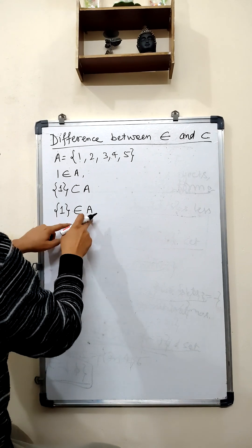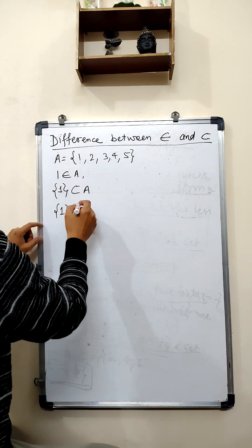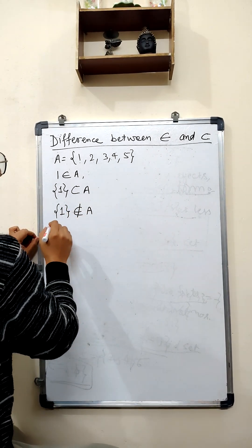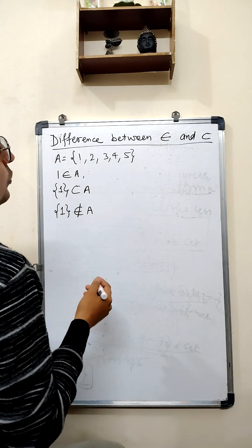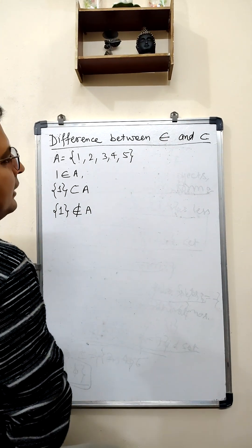Because, this is a subset of A and this is not an element, so we will write it as this one. So, I hope the concept of belongs to and is a subset is clear to you.